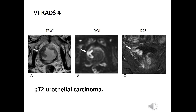In this case, the T2-weighted image shows a tumor on the right side of the bladder. A disruption of low signal intensity muscularis propria is unclear and is rated as T2W Category 3. The axial DW image shows high signal intensity tumor extending focally to the muscularis propria, rated as DW Category 4. The DCE image shows tumor early enhancement extending focally to the muscularis propria, rated as DCE Category 4. The final VRATS score is 4, consistent with a pT2 urothelial carcinoma.